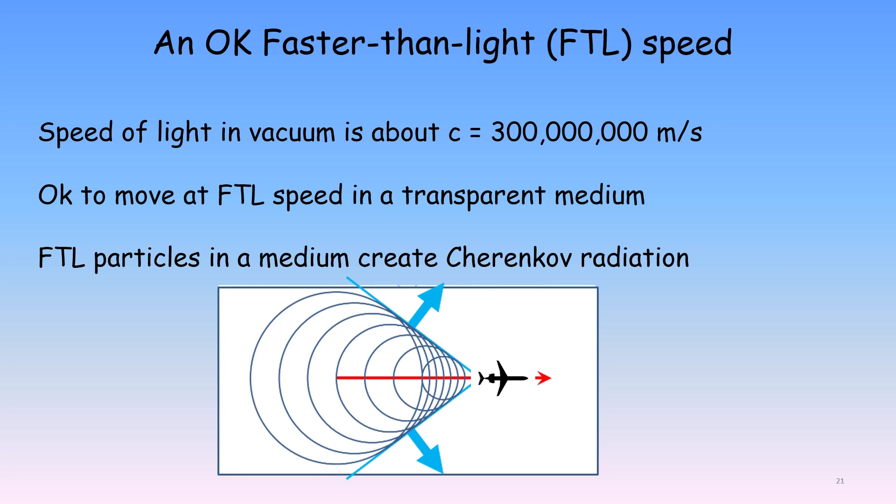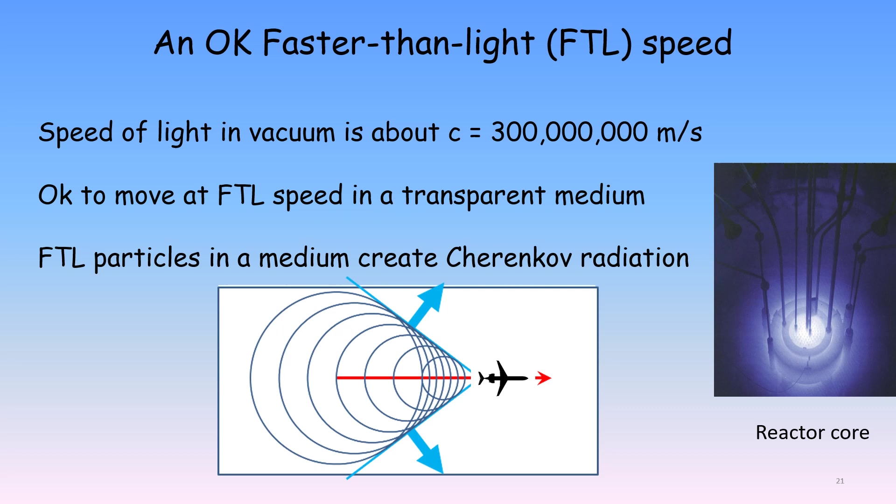Cherenkov radiation, however, is in the form of visible light and not sound. It results in the eerie bluish glow around the underwater core of a nuclear reactor. This glow is due to electrons in the water moving faster than three quarters c, the speed of light in water.